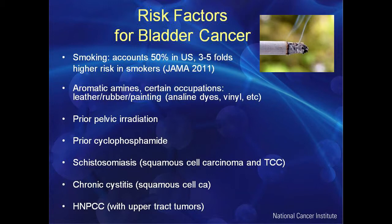Chronic bladder infections can be seen in patients with chronic indwelling catheters or patients who are paraplegic. HNPCC — hereditary nonpolyposis colon cancer — is also associated with the development of urothelial cancer. It's an inherited disorder that predisposes you not only to colon cancer, but to endometrial cancer, stomach cancer, small intestine cancer, and urothelial cancer.